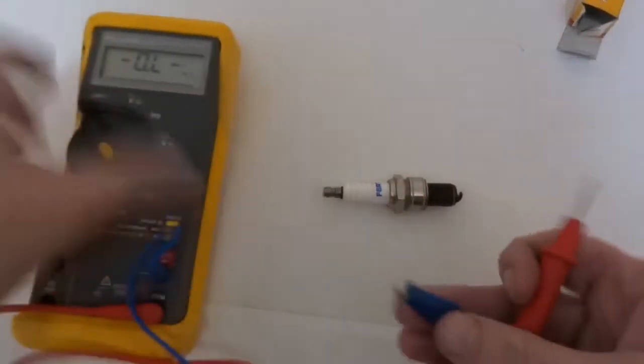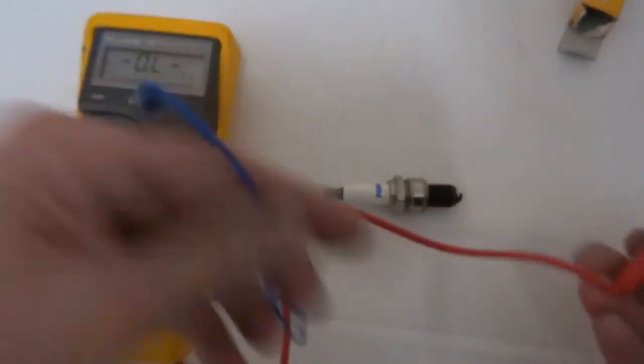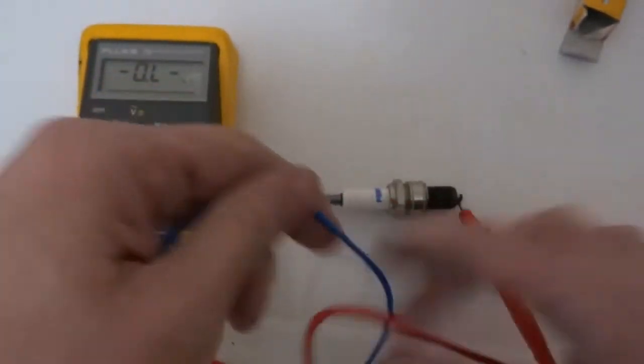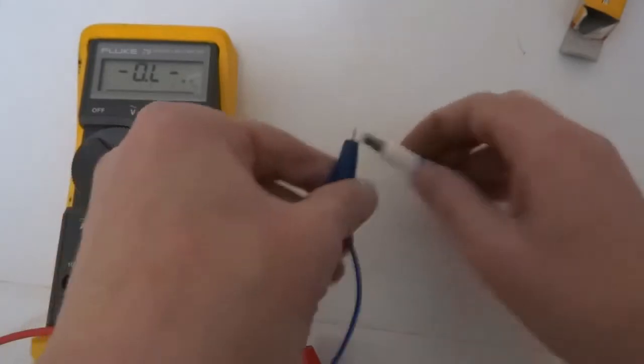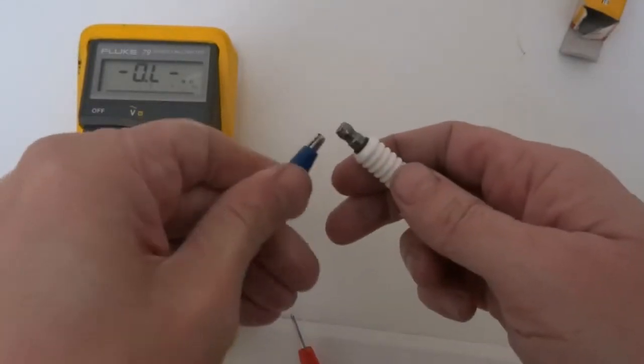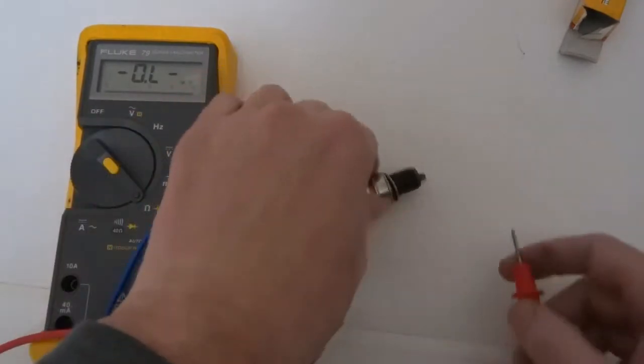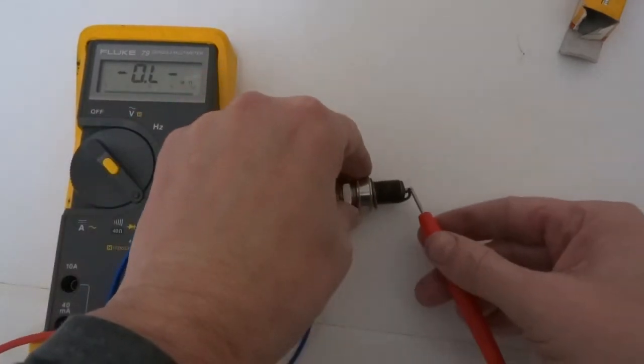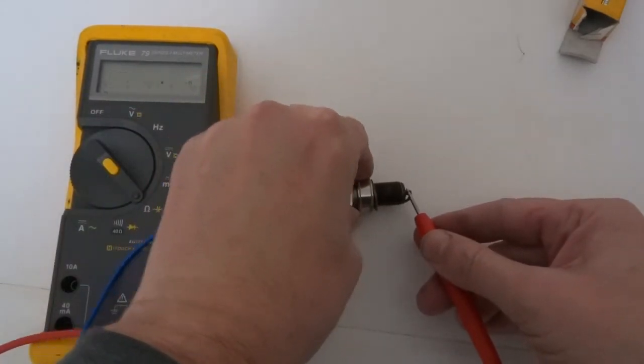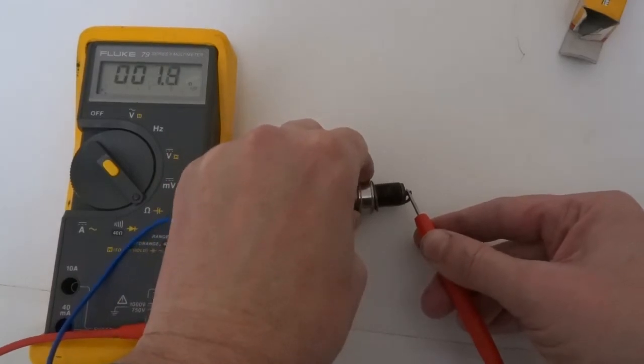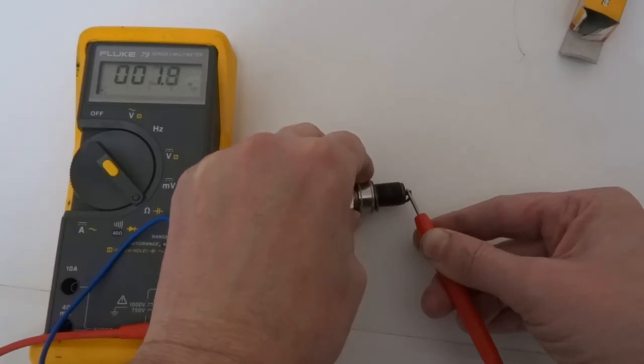I'll plug one end to one side. I'll usually use one of these clips, clip it to the end so it's not secure, then touch it to the end that you've cleaned off. You should get a good reading. There you go, really low resistance.